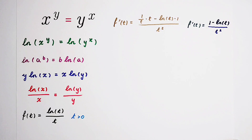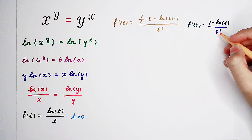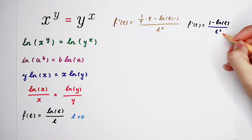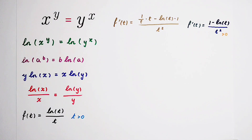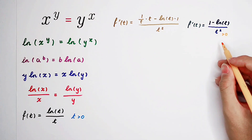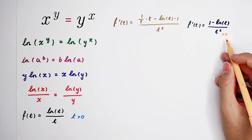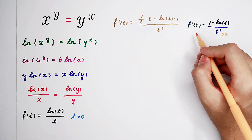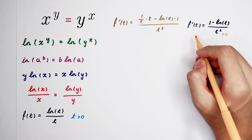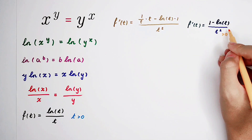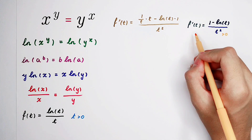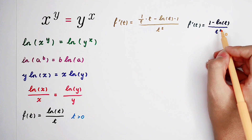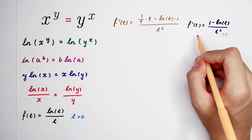So the derivative is equal to 1 minus the natural log of t, over t squared. Since t is positive, t squared is always positive. That means whether the derivative is positive or negative depends entirely on the numerator: if the numerator is negative, the derivative is negative; if the numerator is positive, the derivative is positive.